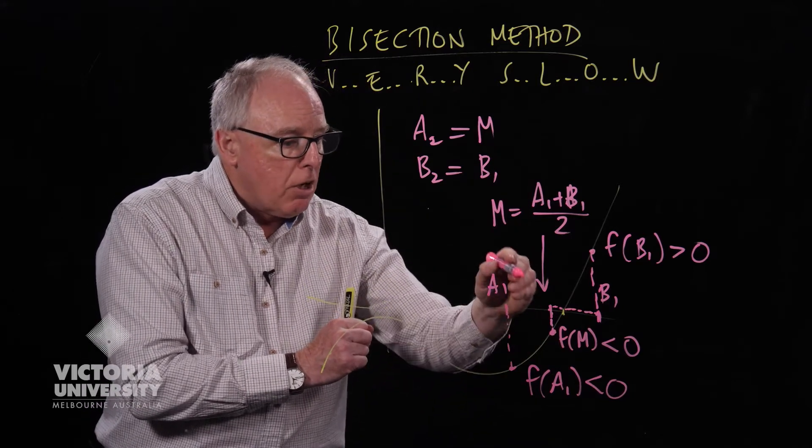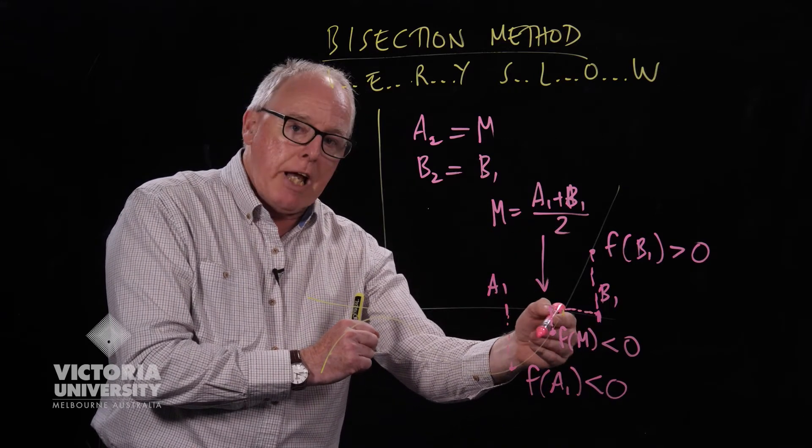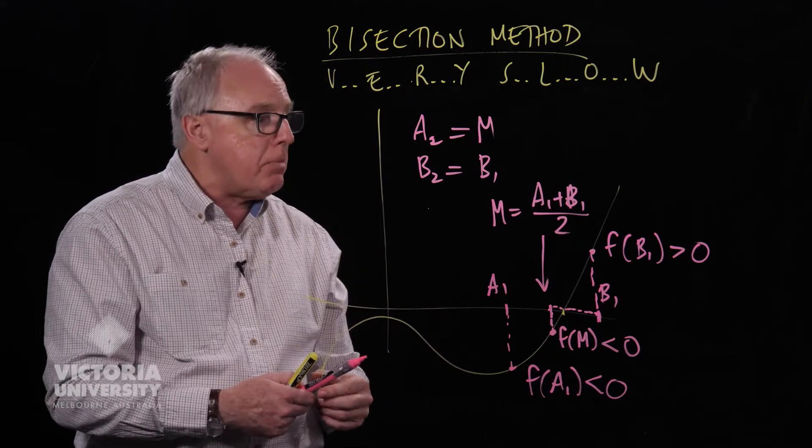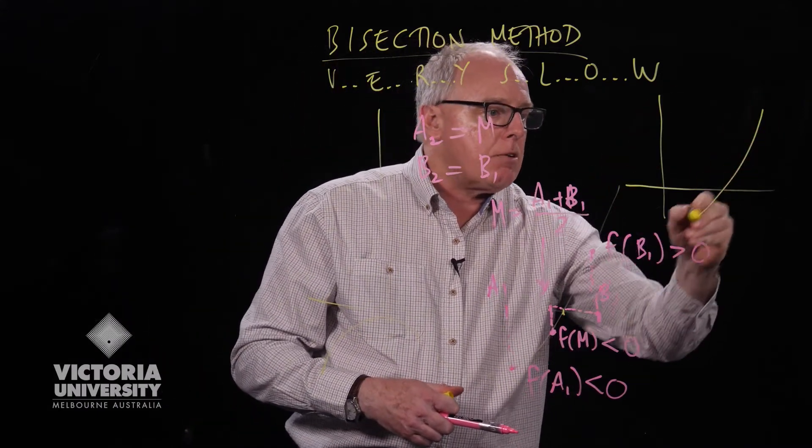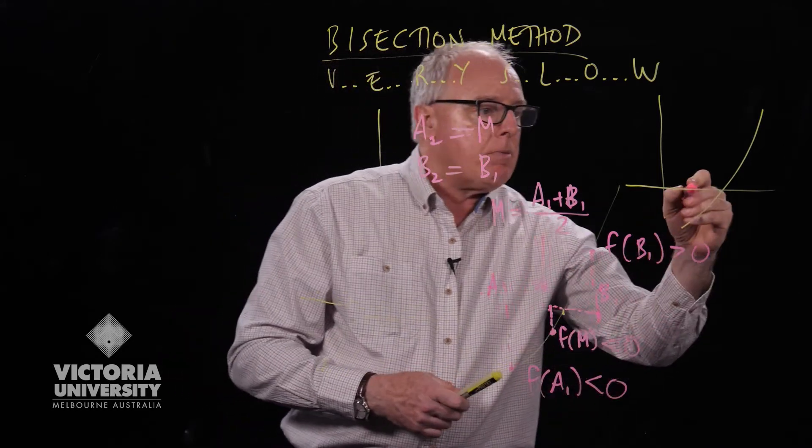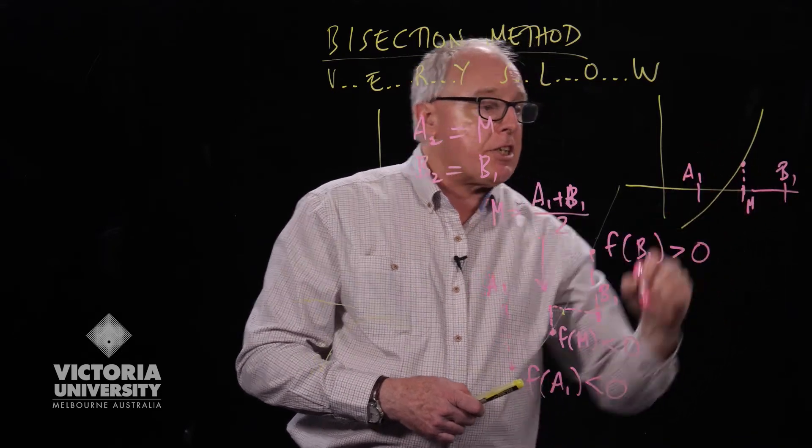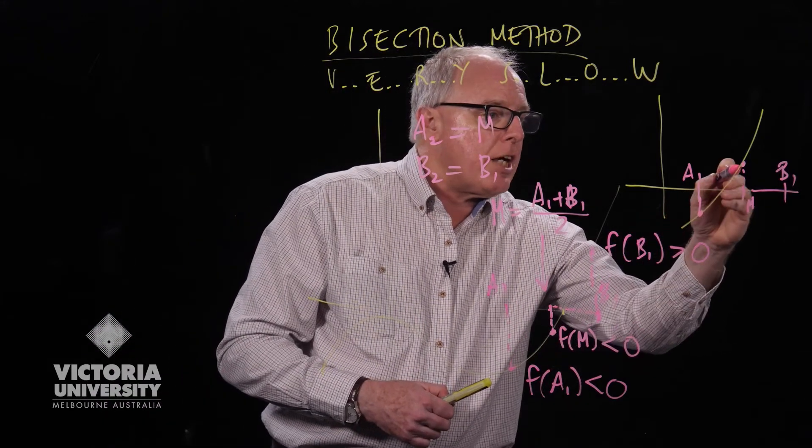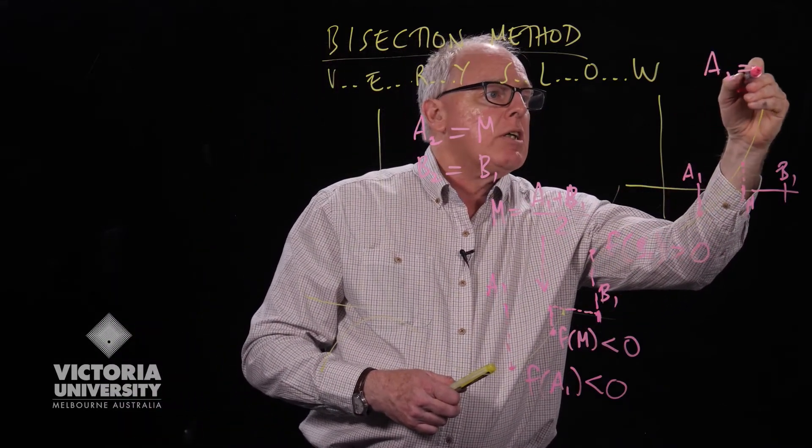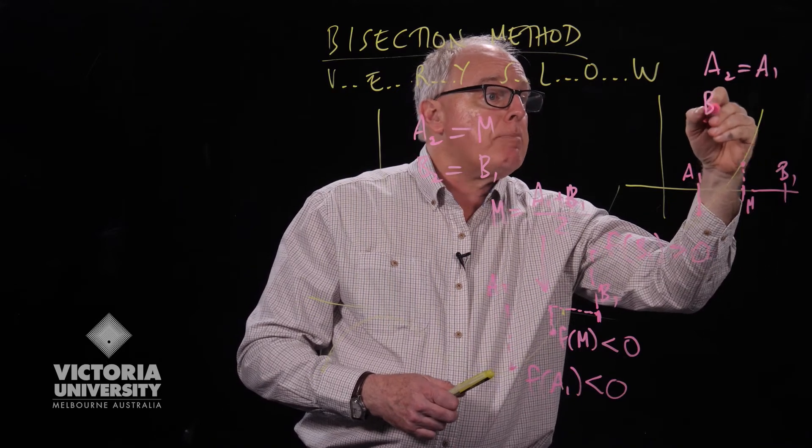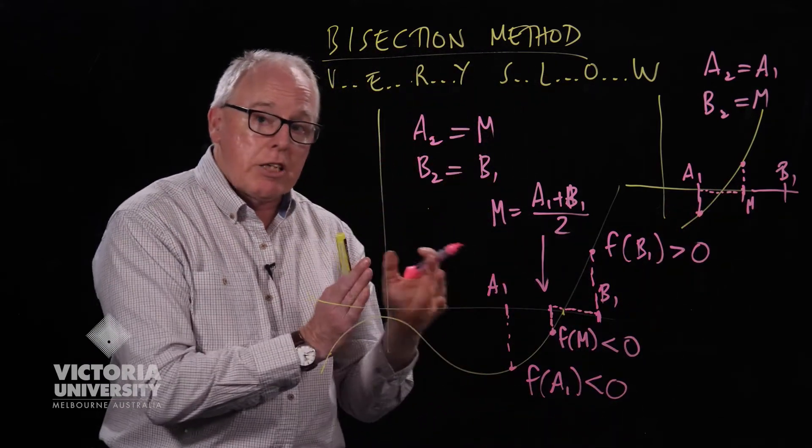If it turned out the graph had crossed closer to a1, then we would change b2 to be m and a1 would stay fixed. I'll draw a picture of that so you know what I mean. I'll squeeze it up in the corner. So imagine we have our graph crosses here. We have a1 here and b1 there. The midpoint here, in this case, is positive. So we have to change a1 and b1 to become a1 and m. So in this case, a2 stays fixed, it's the same as a1, and b2 becomes the midpoint. And again, we have reduced the size of that region.